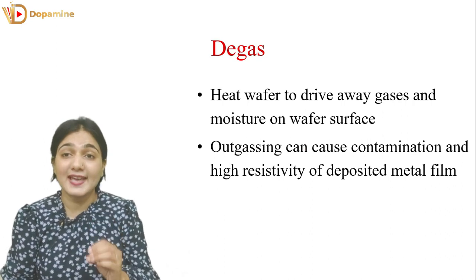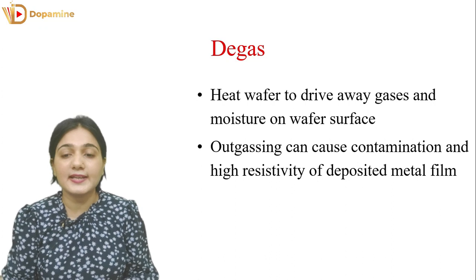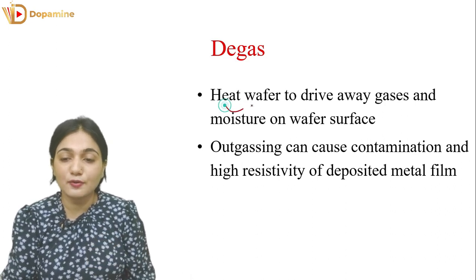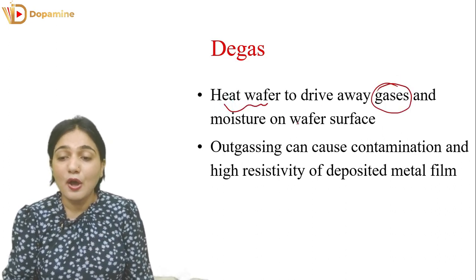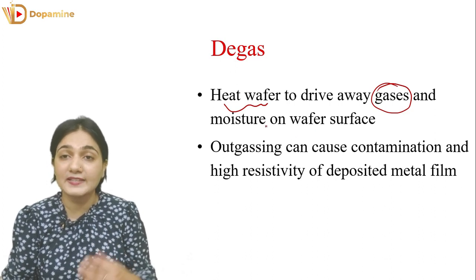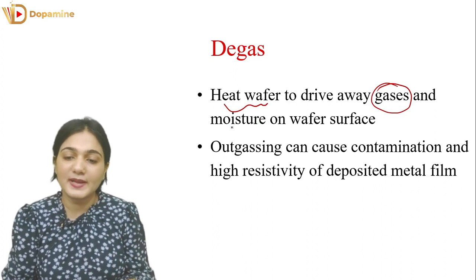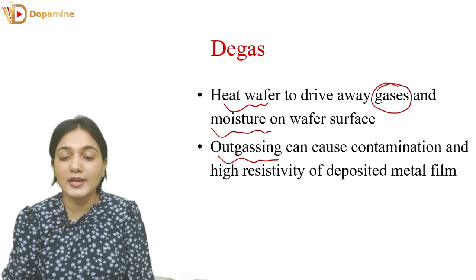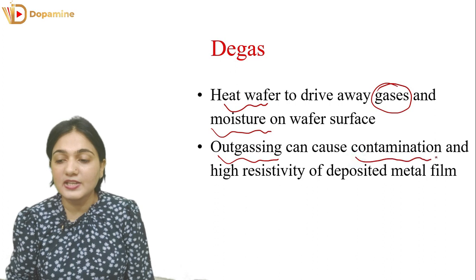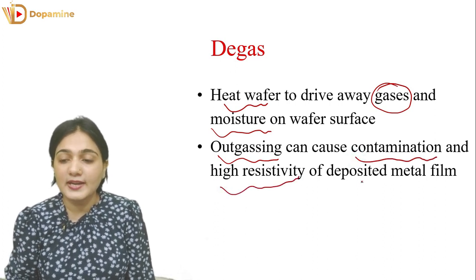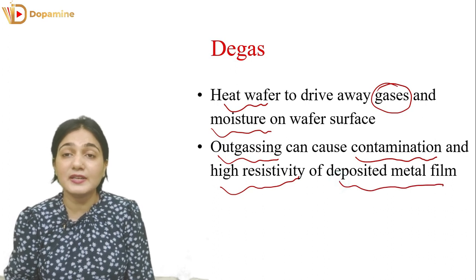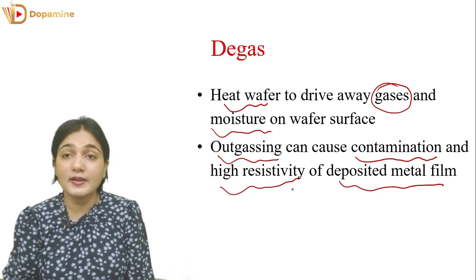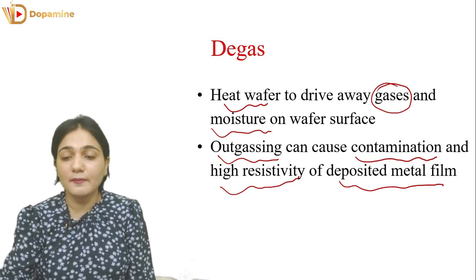Now this is the de-gas process. In de-gas, we remove gases by heating the wafer so that gases and moisture on the wafer surface are removed. Out-gassing is very important — if there is no out-gassing, contamination will be created and high resistivity will form in the deposited metal film. Resistivity should be reduced; otherwise delays will occur and chips will slow down.